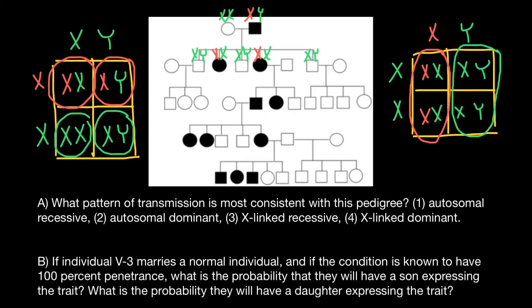This is exactly what we see. This couple has three children. For example, this male got the defective X chromosome from his mother's side and the normal Y chromosome from his father's side. This female got the defective X chromosome from her mother's side, so she has the affected phenotype, and from her father's side she can only get the normal X chromosome. And this male got the normal X chromosome from his mother's side and the normal Y chromosome from his father's side.